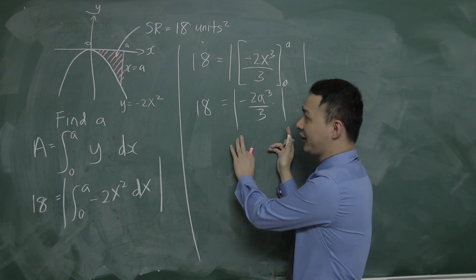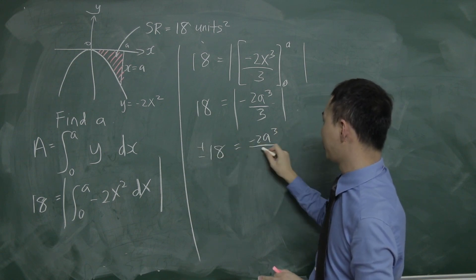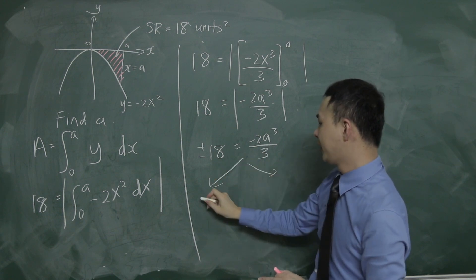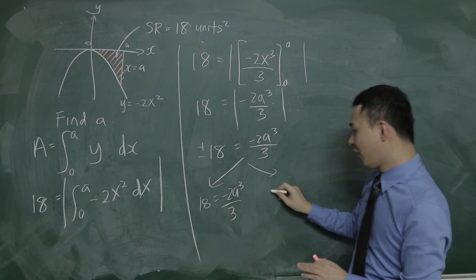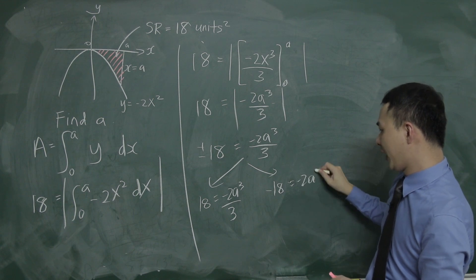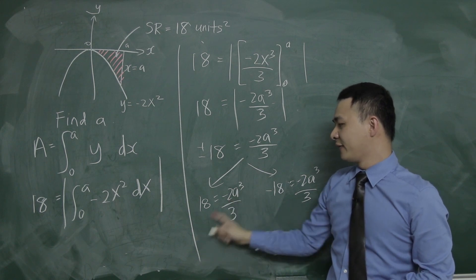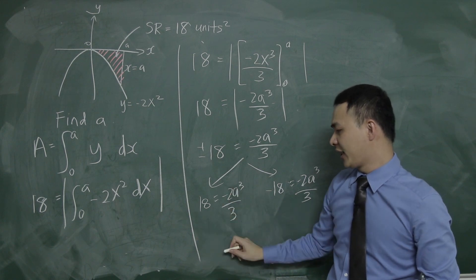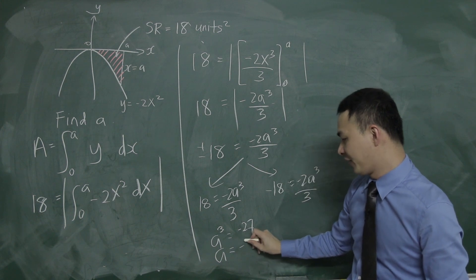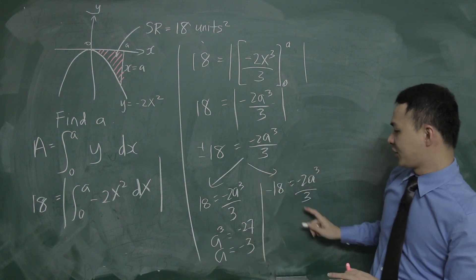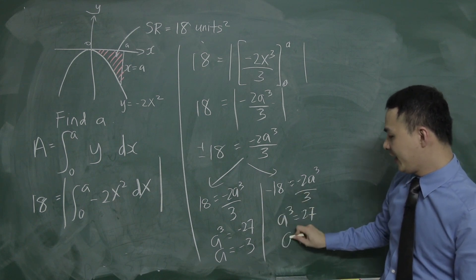Expanding the modulus, the other side gives plus or minus 18, so negative 2a cubed over 3 equals positive 18 or negative 18. Solving the first case: negative 2a cubed over 3 equals 18 gives a cubed equals negative 27, so a equals negative 3. Solving the second case: negative 2a cubed over 3 equals negative 18 gives a cubed equals 27, so a equals 3.